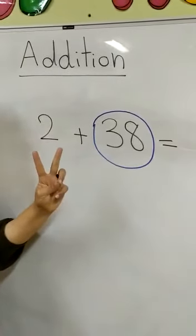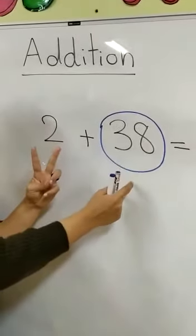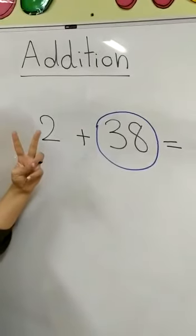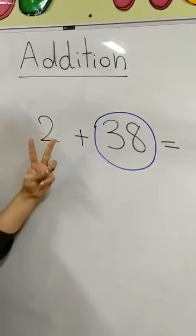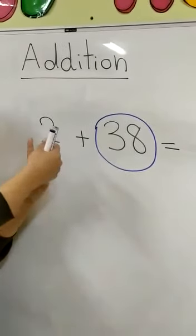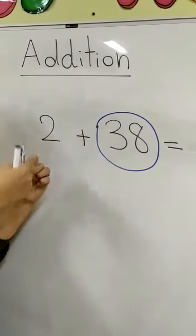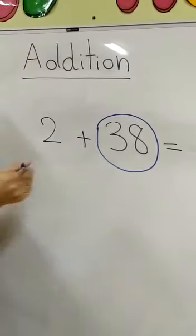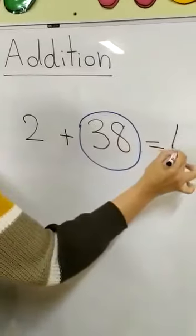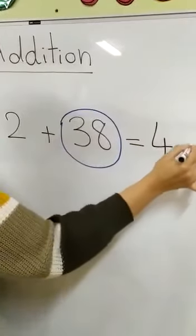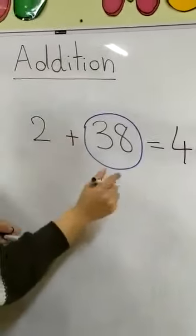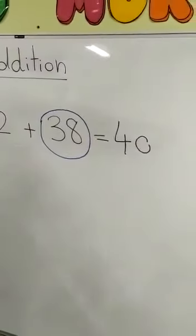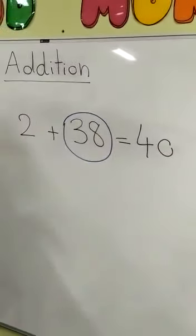Let's count after the number in the circle: after 38 — 39, 40. Super! So 2 plus 38 equals 40. That's it for today, bye-bye!